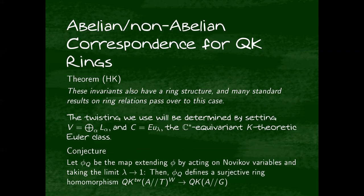A lot of the typical things one expects for quantum K-rings also hold for twisted quantum K-rings. The particular twisting we're interested in is letting V be the sum of these root bundles and letting C be the C-star equivariant K-theoretic Euler class. The C-star equivariant part is basically to ensure it's invertible.